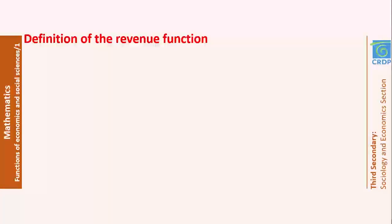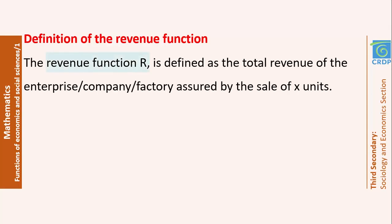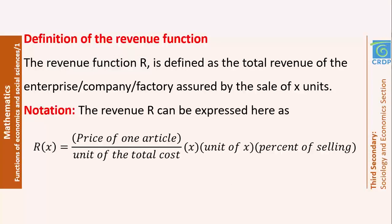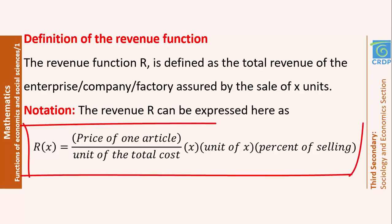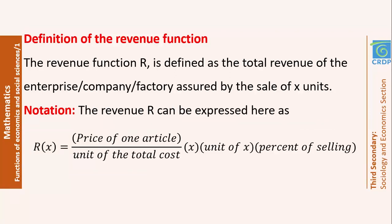Now we are going to start with the revenue. The revenue is the amount of money received by an enterprise for selling a specific amount of items. The revenue function is defined by the price of one article divided by the unit of the total cost, multiplied by x times the unit of x, multiplied by the percent of selling. We divide by the unit of the total cost to make sure the revenue function and the cost function have the same unit. Sometimes the question states that all products were sold; sometimes only a specific percent was sold.